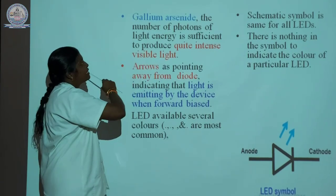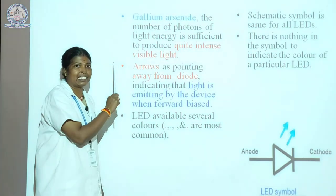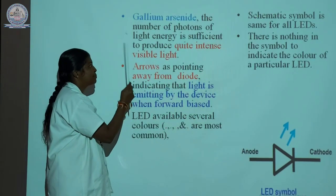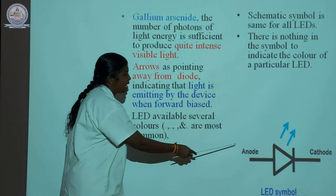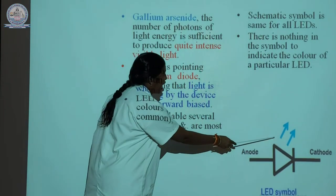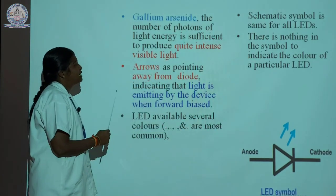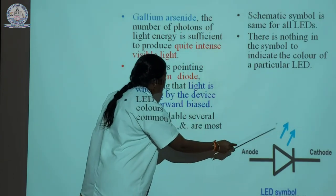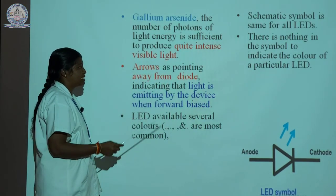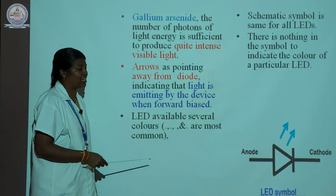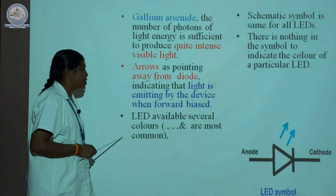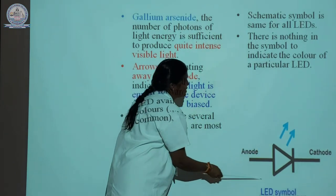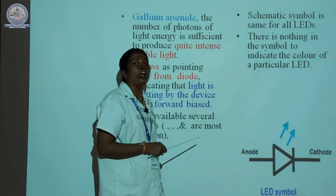In gallium arsenide, the number of photons of light energy is sufficient to produce quite intense visible light. The arrow in the diagram points away from the diode, indicating that light is emitted by the device when it is forward biased. The LED is available in several colors.